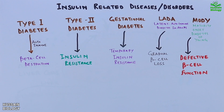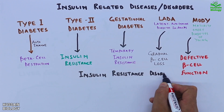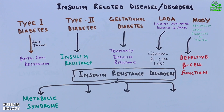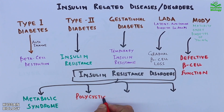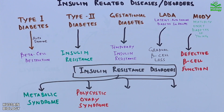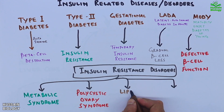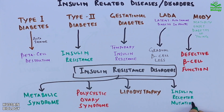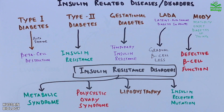There is also a broader category of insulin resistance disorders. First is metabolic syndrome, which encompasses obesity, high blood pressure, and abnormal lipid levels. Second is polycystic ovary syndrome, a common condition in women linked to insulin resistance. Third is lipodystrophy, a condition where fat distribution is abnormal, affecting insulin sensitivity. And finally, insulin receptor mutation — a rare genetic condition that makes cells less responsive to insulin.